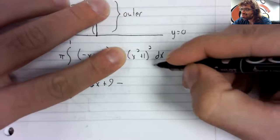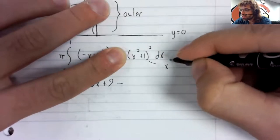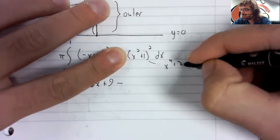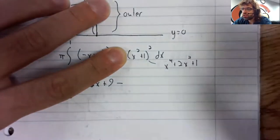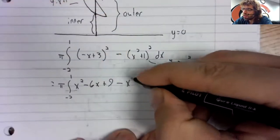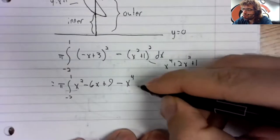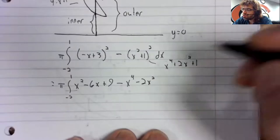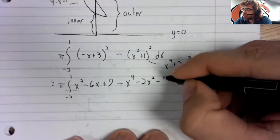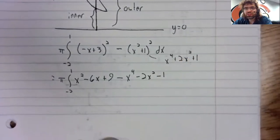Minus. This is x to the fourth plus two x squared minus one. So minus x to the fourth, minus two x squared, minus one.